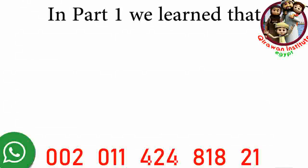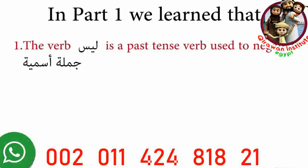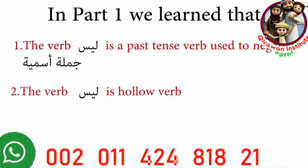In part one we learned that the verb leysa is a past tense verb that's used to negate a jumla ismiya. A jumla ismiya is a sentence that begins with a name or a noun. We also learned that leysa is a hollow verb and we learned how to conjugate leysa.